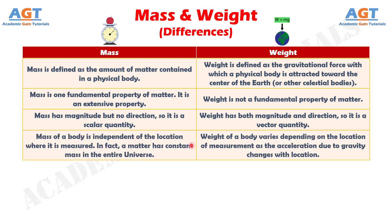Number 4: Mass of a body is independent of the location where it is measured. In fact, a body has constant mass throughout the entire universe, whereas the weight of a body varies depending on the location of measurement, as the acceleration due to gravity changes with location.